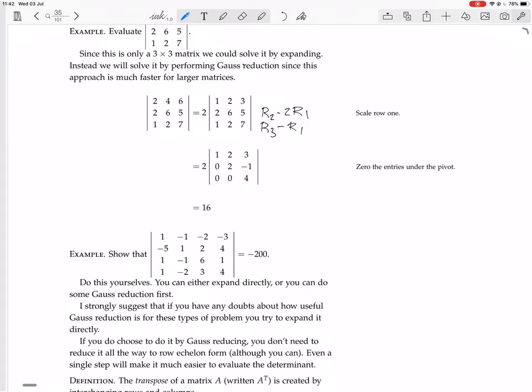So we could start off with row 2 plus 5 times row 1, row 3 becoming row 3 minus row 1, and row 4 becoming row 4 minus row 1. Then we'll have the determinant of 1, minus 1, minus 2, minus 3 as the first row. The second row would be 0. So we have minus 5 plus 5 is 0, then we have 1 minus 5, which is minus 4, then we have 2 minus 10, which is minus 8, and 4 minus 15, which is minus 11. Then in the third row we have 0 minus 1 plus 1, which is 0, then 6 plus 4, which is 10.